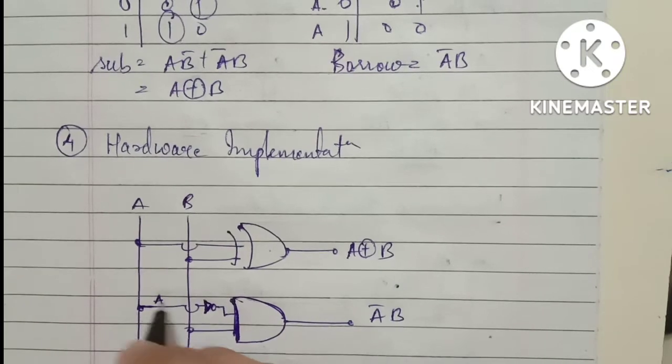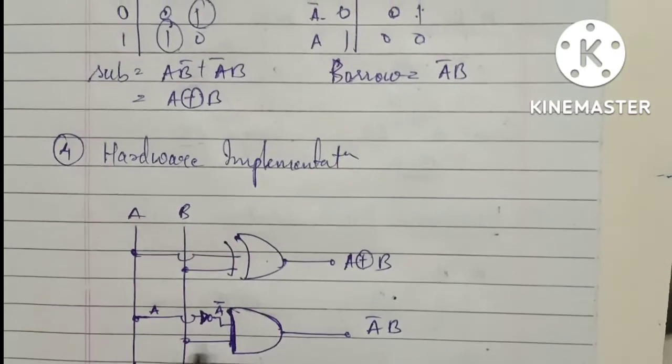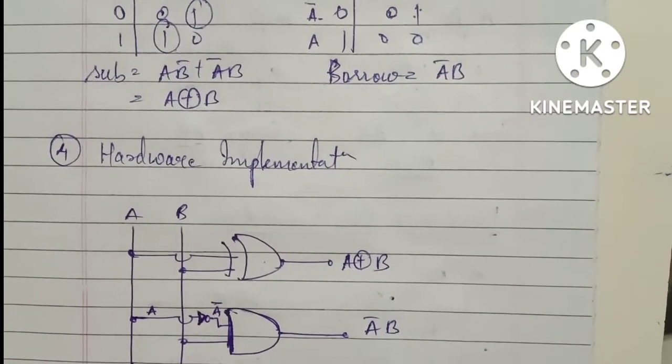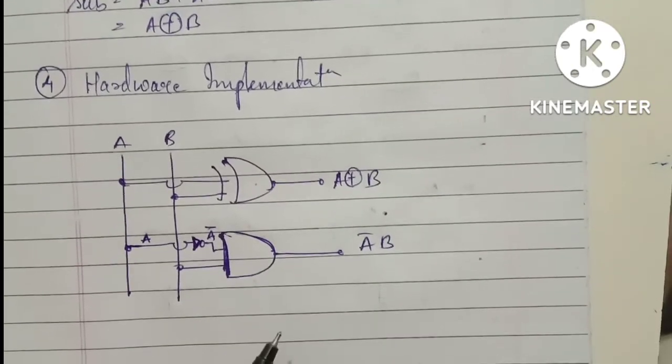It will provide A, but this will provide you the A bar. Clear? This is the hardware implementation. Understood?